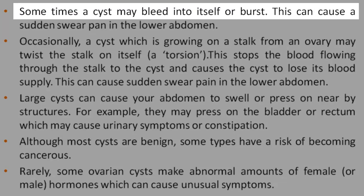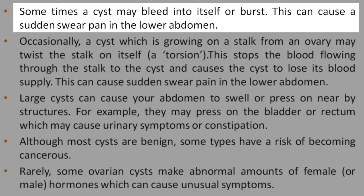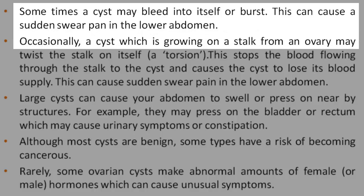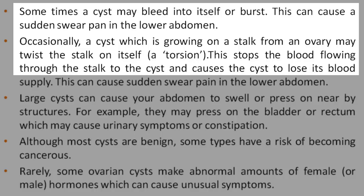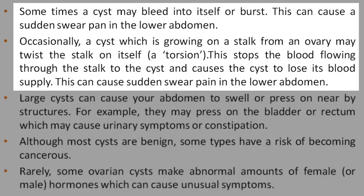Sometimes a cyst may bleed into itself or burst. This can cause a sudden severe pain in the lower abdomen. Occasionally, a cyst which is growing on a stalk from an ovary may twist the stalk on itself — a torsion. This stops the blood flowing through the stalk to the cyst and causes the cyst to lose its blood supply, which can cause sudden severe pain in the lower abdomen.